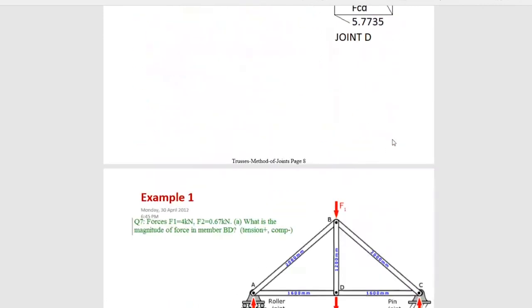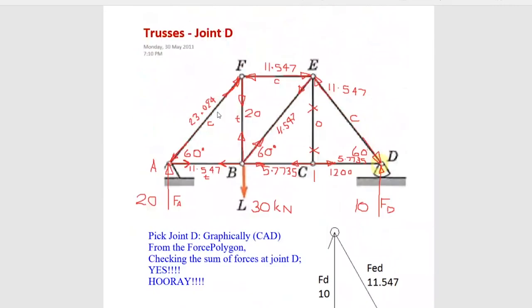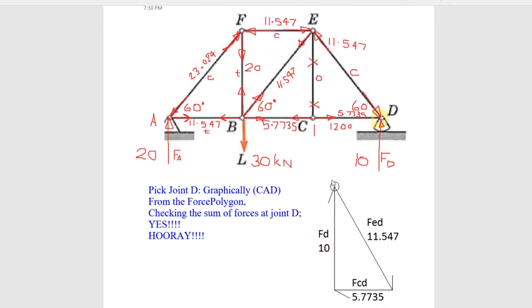The method of joints is a little bit slow because you go from one end to the other working one joint at a time, but it solves every part of the truss. You know everything about every member, and you never do anything more complex than a force polygon for each joint.